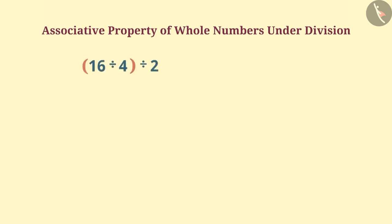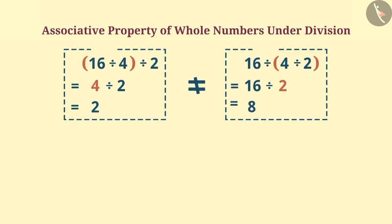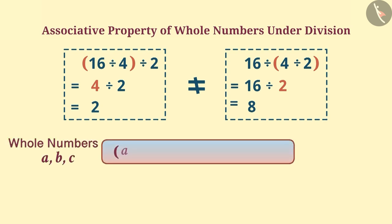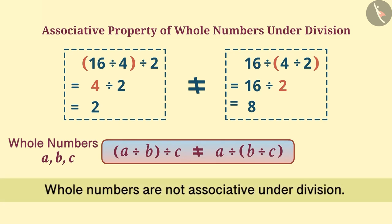Now if we talk about division, then any 3 whole numbers cannot be divided by changing the order of division. That is, for whole numbers A, B and C, A divided by B divided by C and A divided by B divided by C are not equal. In this way, whole numbers are not associative under division.